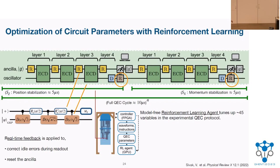One counter-intuitive result was that the reinforcement learning agent chose to slow down the ECD gate. This is counter-intuitive because you would think that the faster the circuit, the lesser the error probability, and we should do better by doing everything fast. But the RL agent chose to do it slower. We have some intuition behind it, but I'm not going to say anything about it — if you have questions, I would definitely answer.